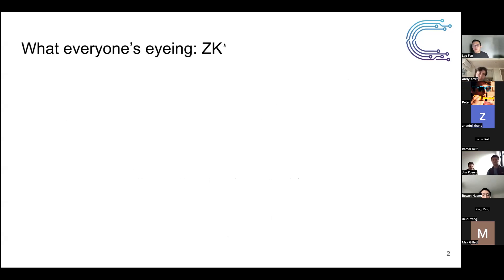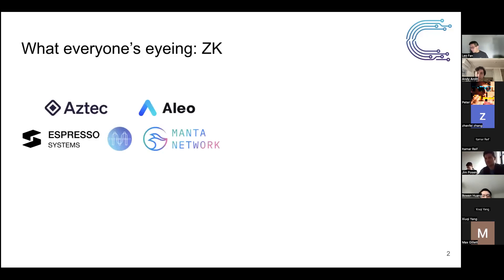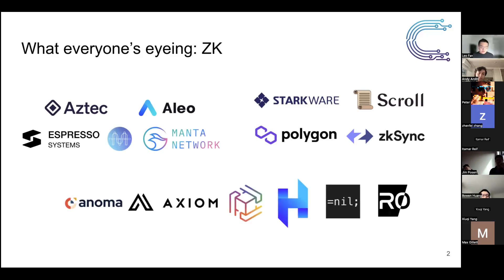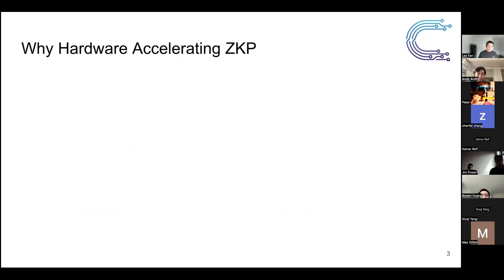Let's start with some motivation. ZK proofs are one of the hottest topics in the blockchain community right now. We have various projects working on different parts: privacy-oriented blockchains like Aztec, private rollups, ADL, Espresso, Manta, Mina, and for near tools a bunch of projects trying to scale up TPS for Ethereum. Besides that, we also have ZK indexer, ZK bridge, and the ZK proof market.